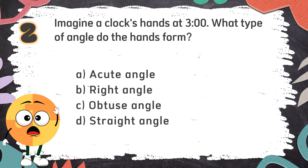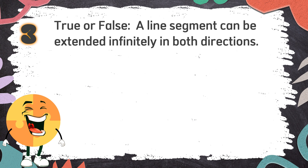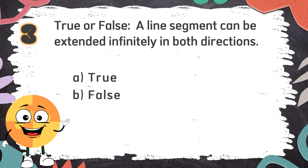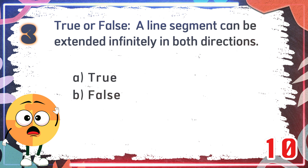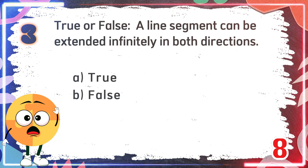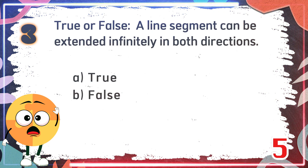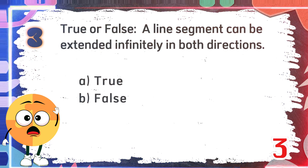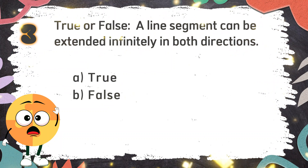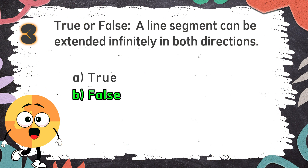The correct answer is B. Right angle. Number 3: True or false — a line segment can be extended infinitely in both directions. The choices are: A. True, B. False. The correct answer is B. False. A line segment has two endpoints, so it has a definite length and cannot be extended.